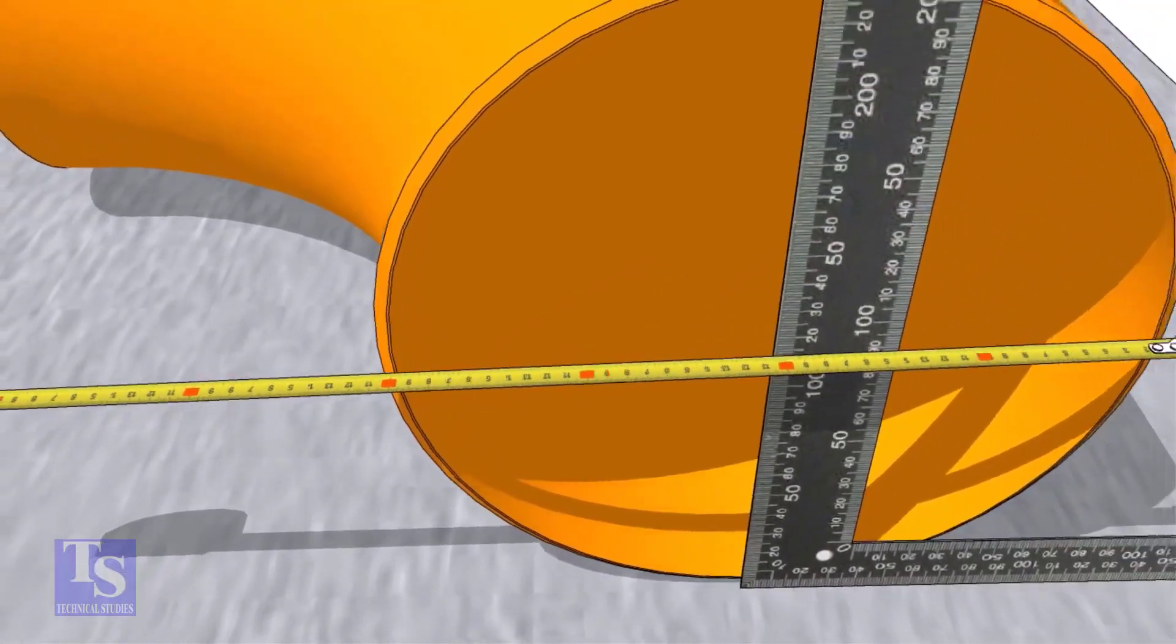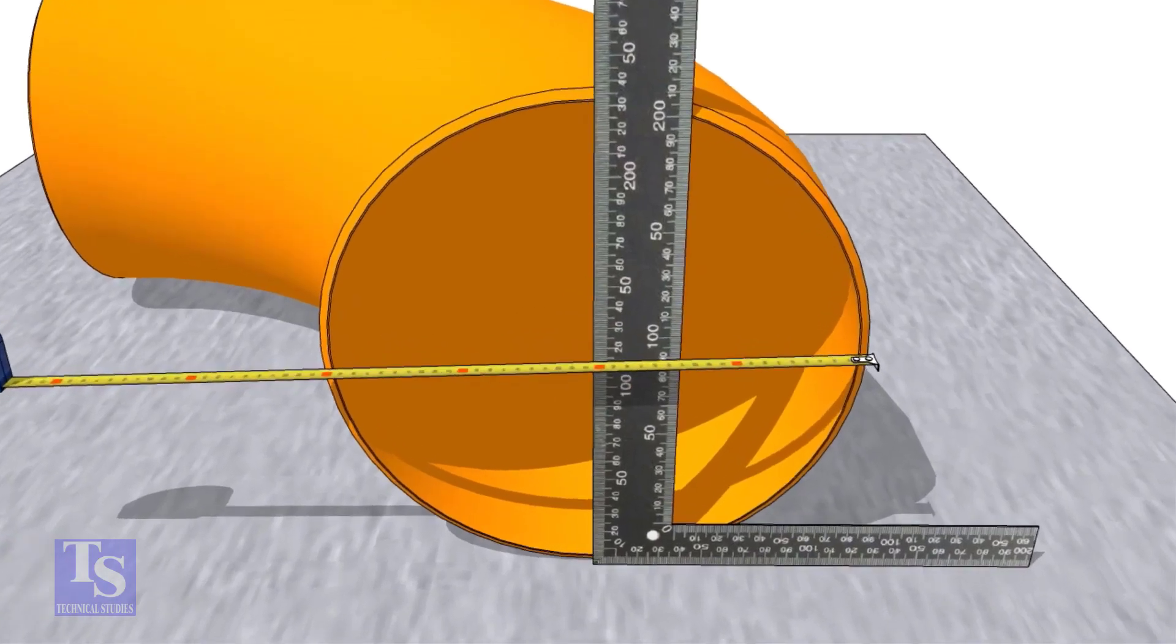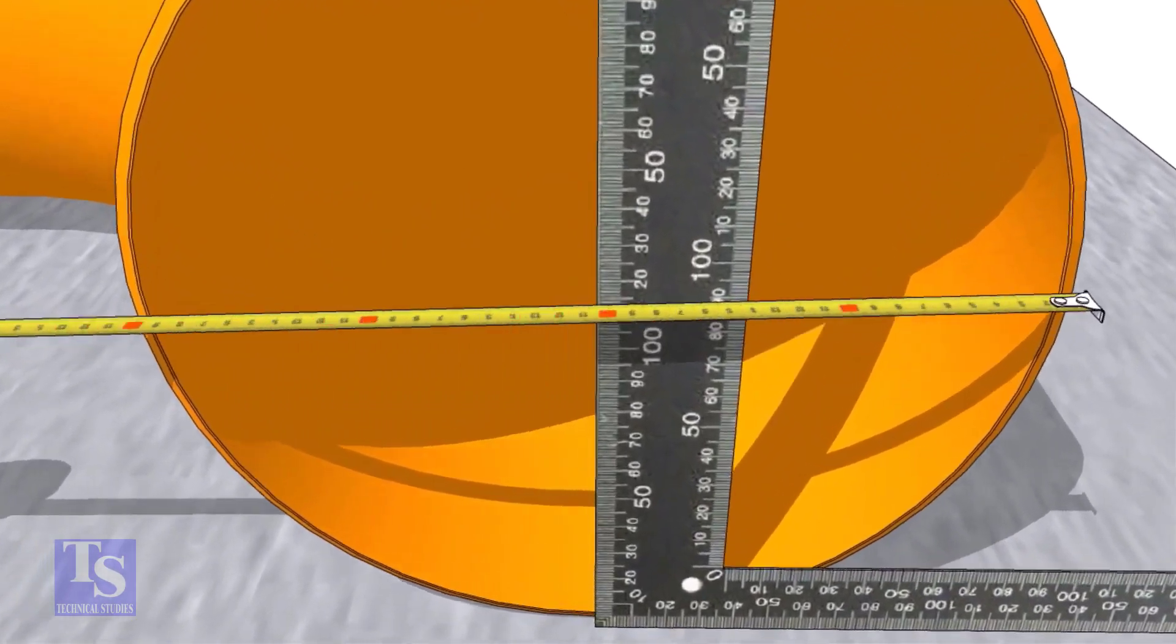Put a right angle at the center of the elbow. Make sure the distance from the edge of the elbow to the face of the right angle is equal.